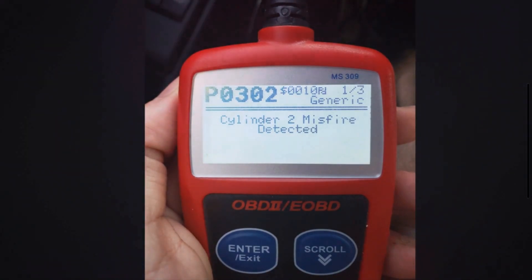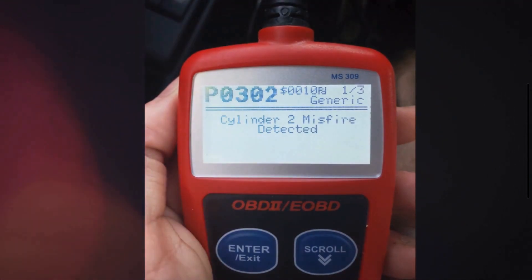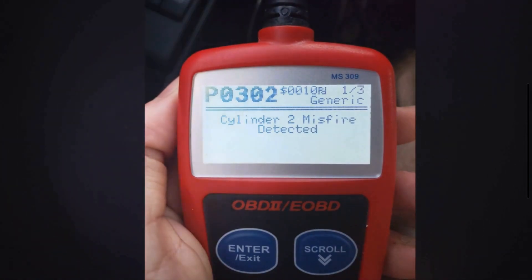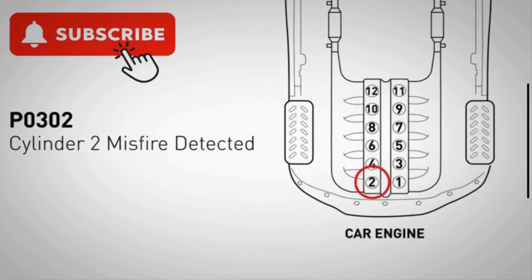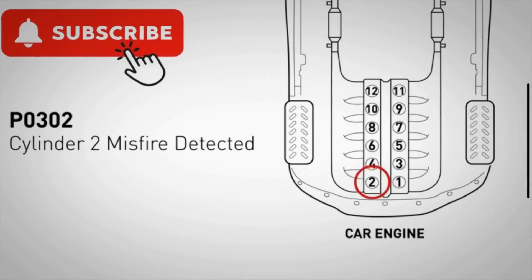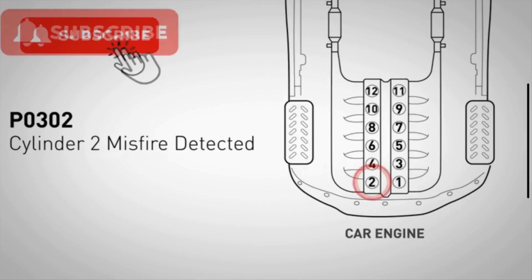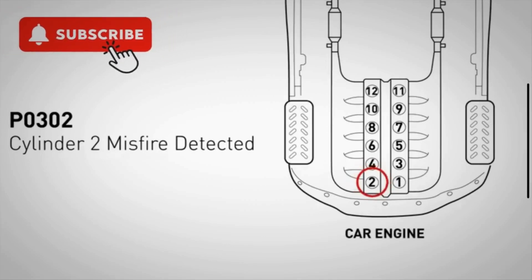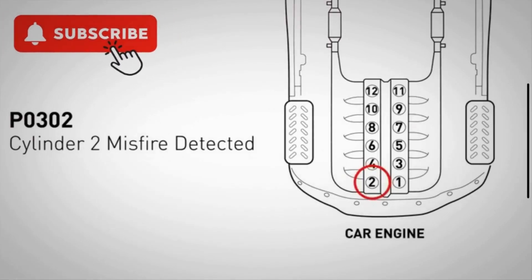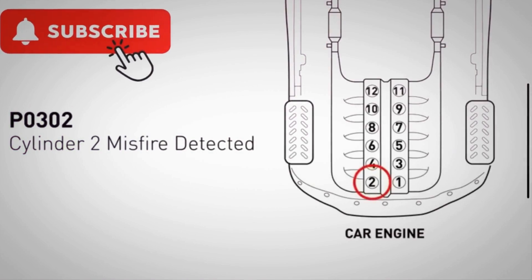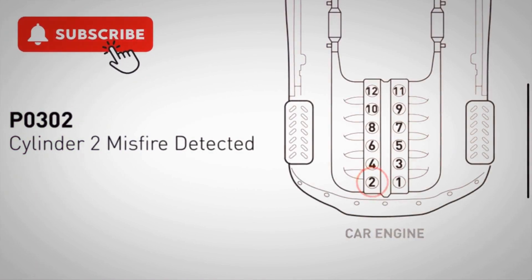Let's understand the meaning of the PO302 code. The PO302 code is a diagnostic trouble code that indicates a misfire in Cylinder 2. A misfire occurs when the air-fuel mixture in the combustion chamber fails to ignite properly or at all.